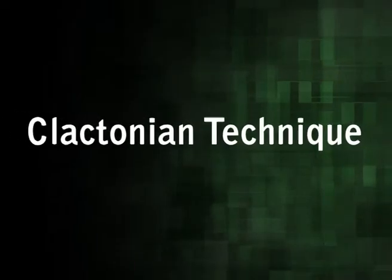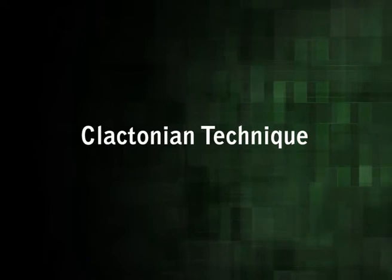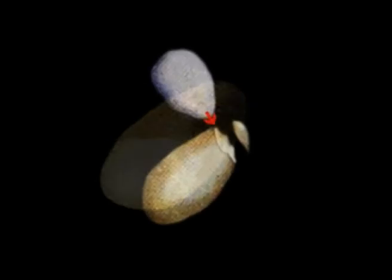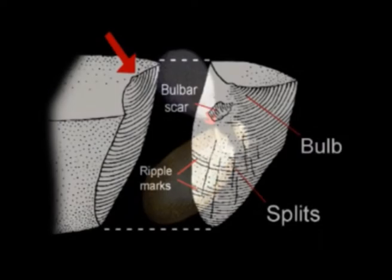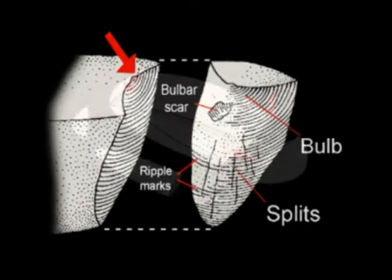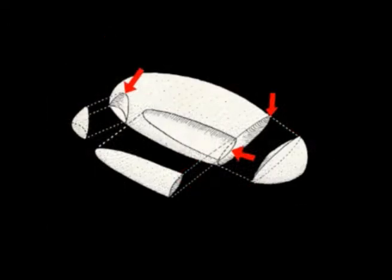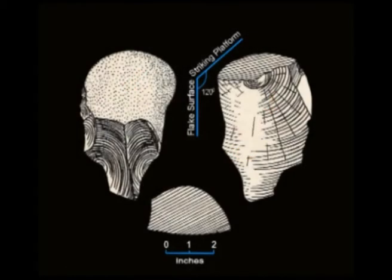Now let us discuss the next point: Clactonian technique. It is a technique of detaching a large flake for making flake tools. Clactonian flakes could also be obtained by using the anvil or stone hammer technique. In this case, a naturally flattened surface is used as the striking platform of the hammer. Such flakes will have a prominent bulb of percussion on the main flake surface near the striking platform, and the angle between the main flake surface and the striking platform is always greater than 90 degrees, or roughly 120 degrees.